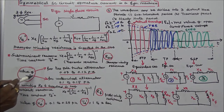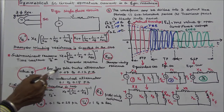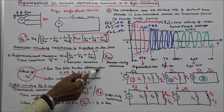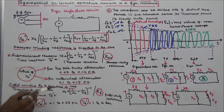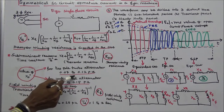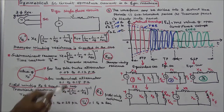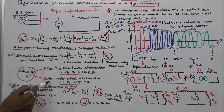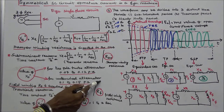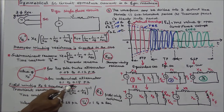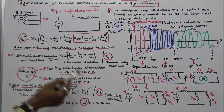The value of X double dash for a two-pole turbo alternator is 0.07 to 0.12 per unit, and for a water wheel alternator it is 0.1 to 0.15 per unit.